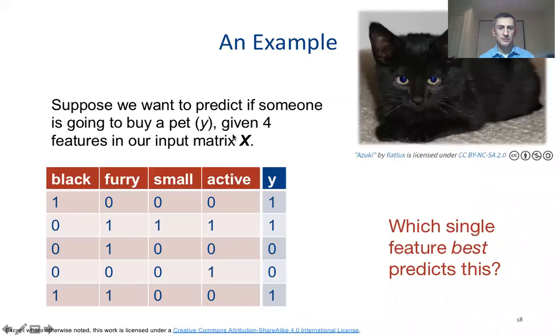So let's get started with decision trees and we'll get started by looking at an example. The example is suppose that we want to predict if somebody's going to buy a pet, that's our y variable, given four features in our input matrix X. The four features as you can see are black, furry, small, and active.